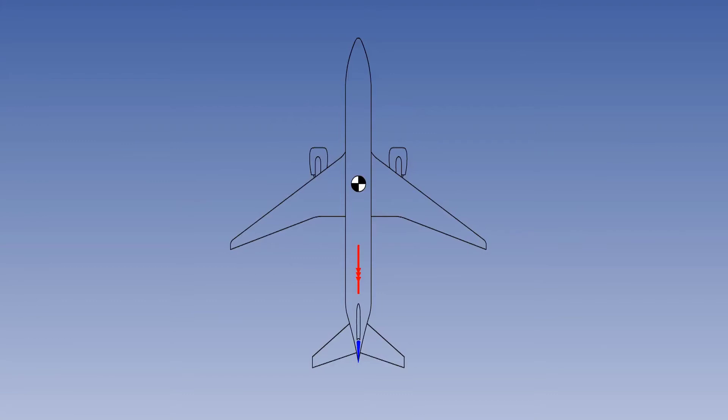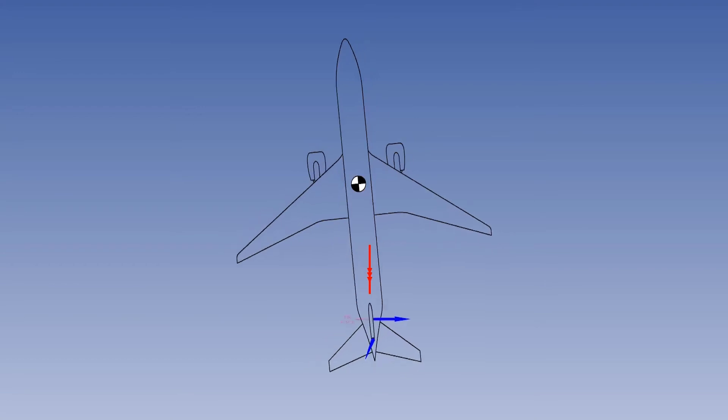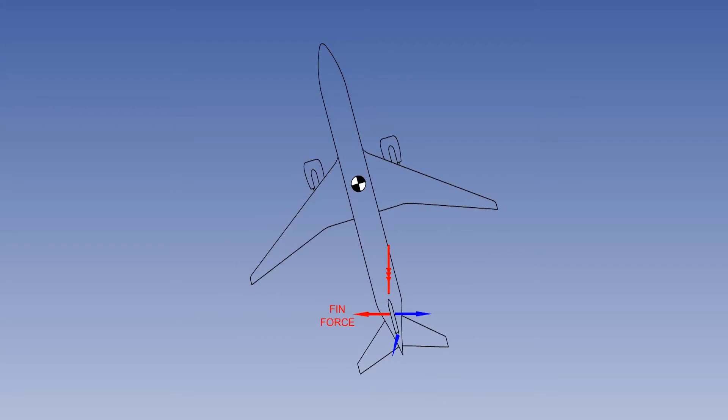Consider an aircraft in straight steady flight. If the rudder is deflected to the left, the camber of the fin is changed and an aerodynamic force, here in blue, will act to the right at the fin centre of pressure. The aircraft will yaw to the left.